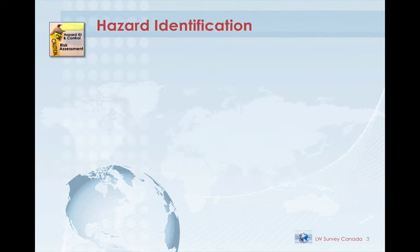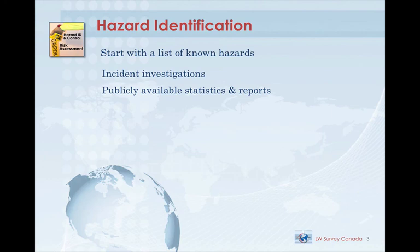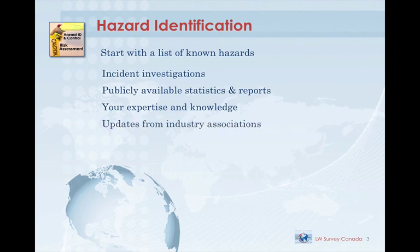Hazard identification can be as straightforward as it sounds when we look at our own work. We start by making a list of the known hazards of the work that we do as a company. We get that information from experience gained from incident investigations, publicly available statistics and reports, your expertise and knowledge, and updates from industry groups such as N-Form, Canada's Oil and Gas Safety Association. This list becomes our initial hazard inventory list.